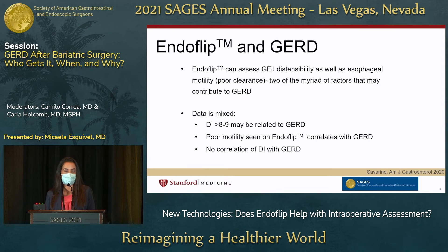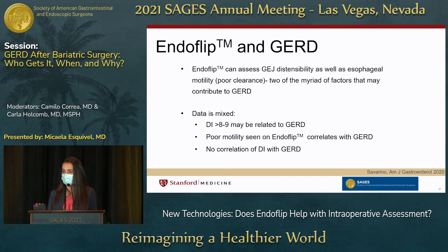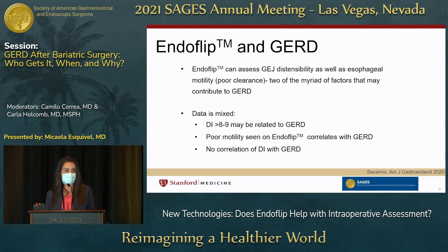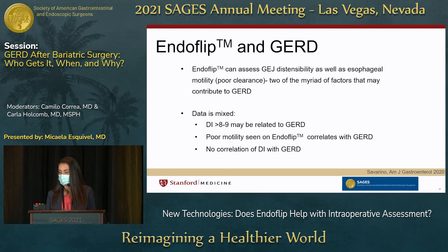Looking at Endoflip and GERD more broadly: some studies shown previously, after hiatal hernia and POEM, assessed GERD post-procedure. We know Endoflip assesses GE junction distensibility and esophageal motility — poor clearance may be a risk factor for reflux, particularly post-sleeve gastrectomy. However, the data is mixed. Some studies show very high distensibility (over 8–9) may relate to GERD; others say it's the esophageal motility that correlates with reflux; still others find no correlation — even in patients with Barrett's esophagus. This further proves that reflux is a very complex, multifactorial process.